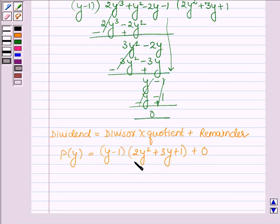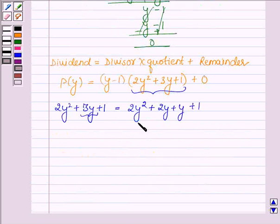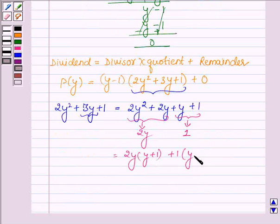Now our next step is to factorize 2y² + 3y + 1 as the product of binomials by splitting the middle term which is 3y. So we have 2y² + 2y + y + 1 and now taking 2y common from the first two terms and 1 common from the last two terms we have 2y(y+1) + 1(y+1).